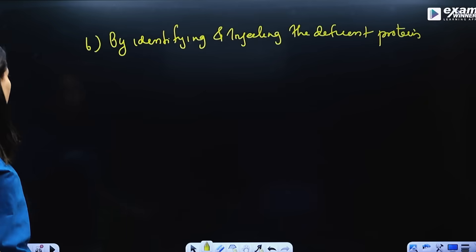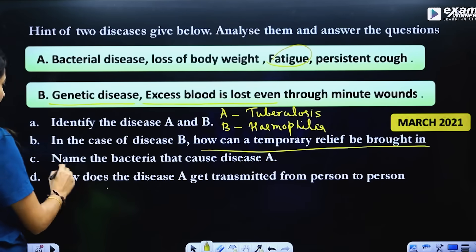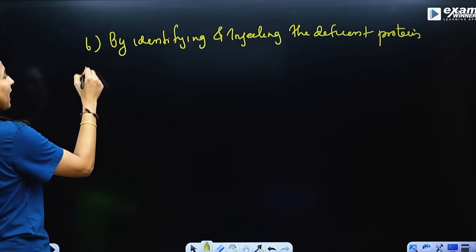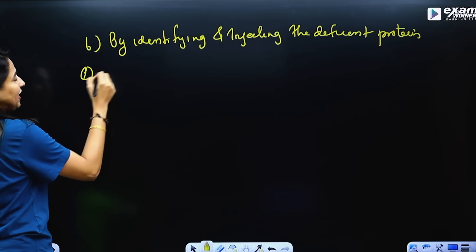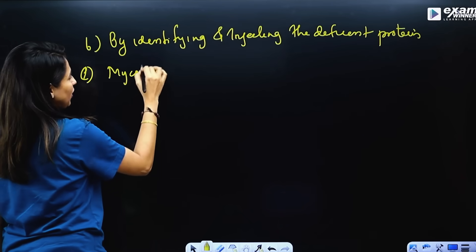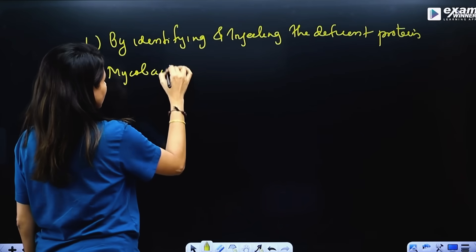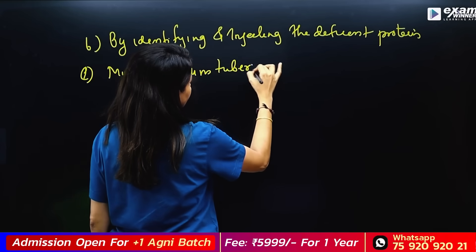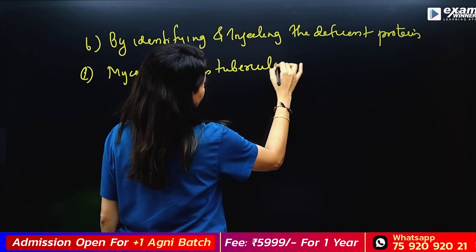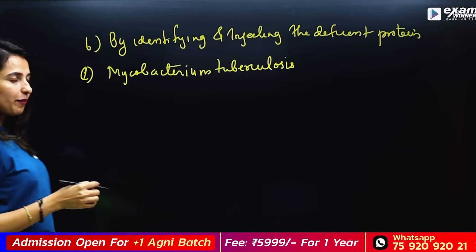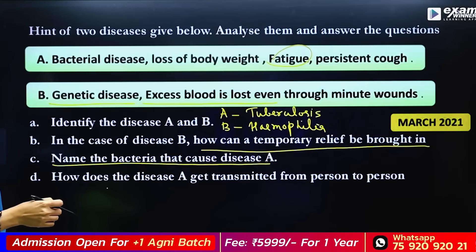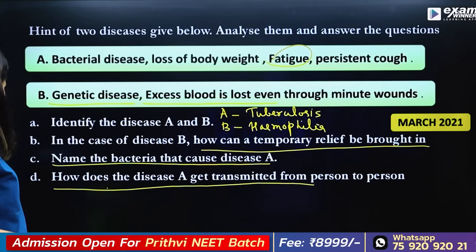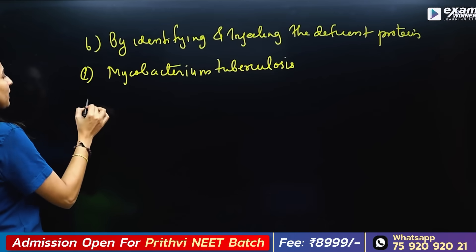What is the bacteria that causes disease A? Disease A is caused by Mycobacterium tuberculosis. How does disease A get transmitted from one person to another?